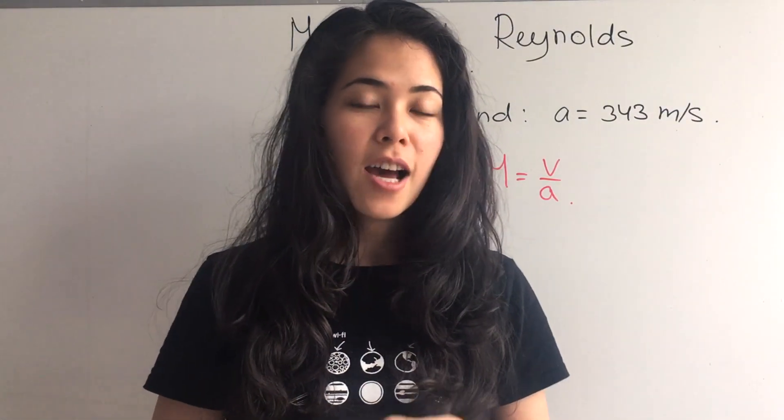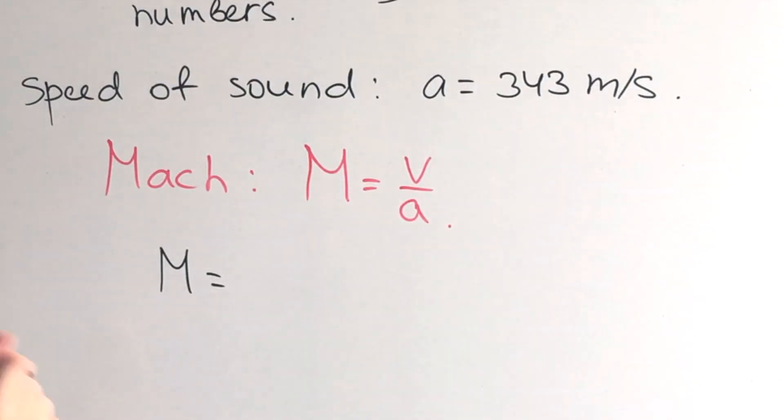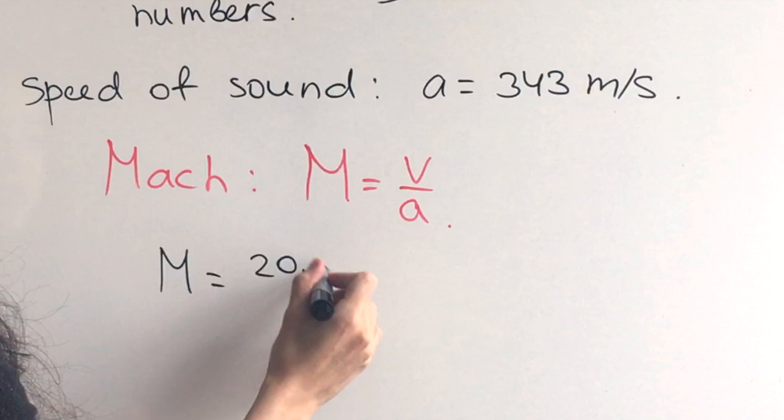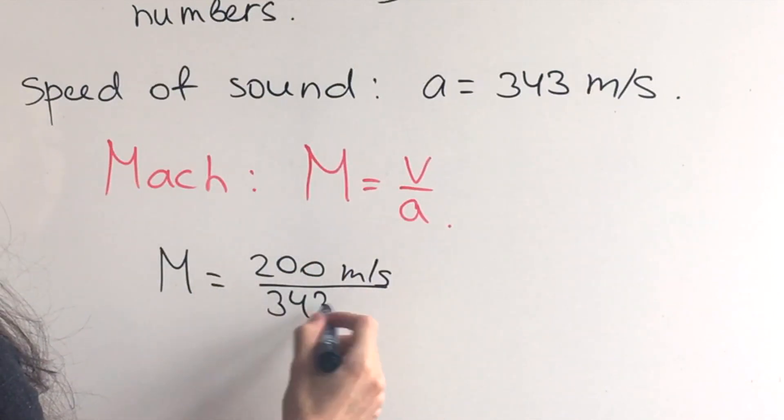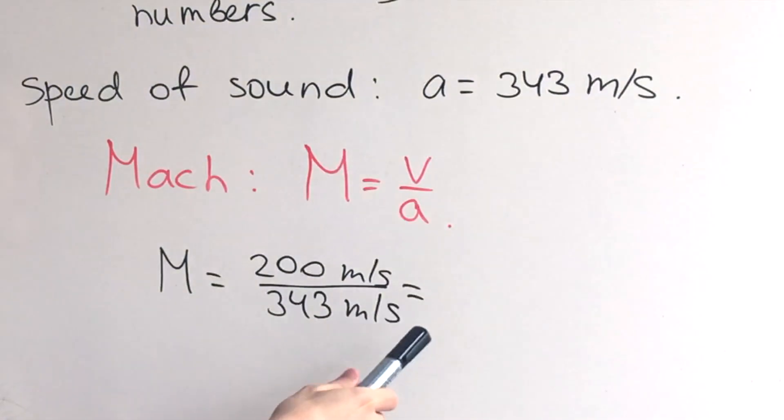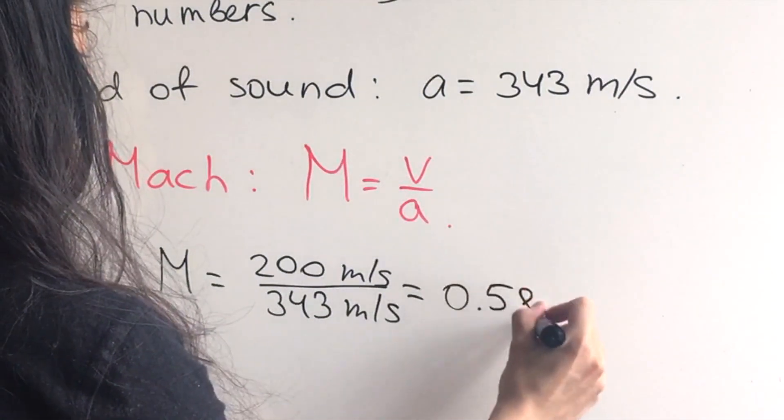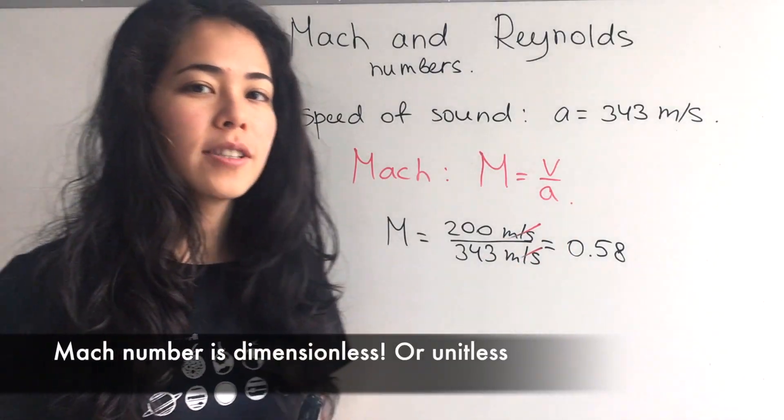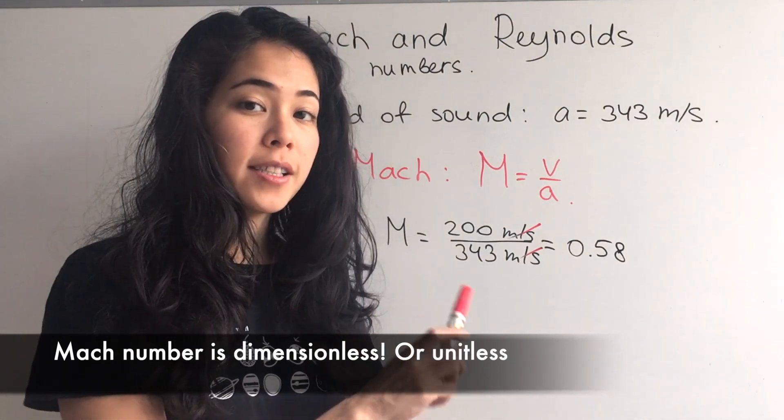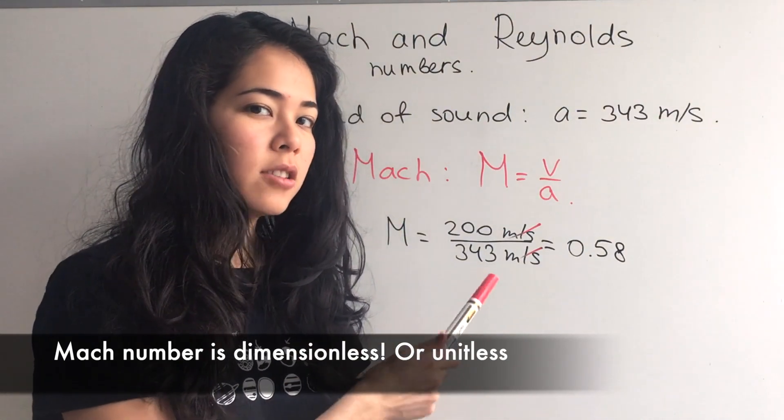Let's figure out how fast 200 meters per second actually is. We find Mach number for 200 meters per second, so divide 200 by 343, and we'll get 0.58. Meters per second will cancel out, so it turns out that Mach number is a dimensionless number.